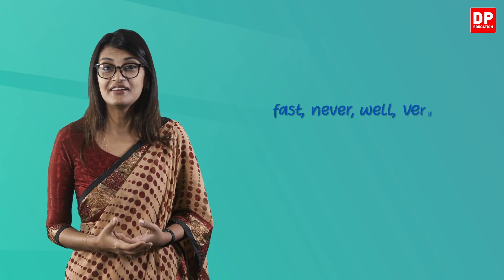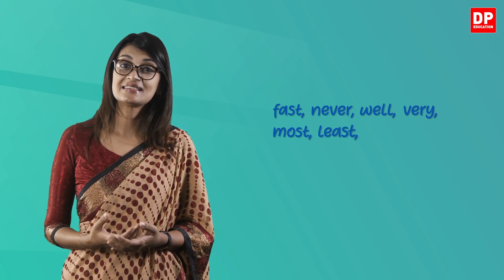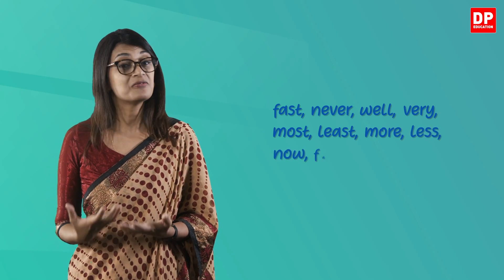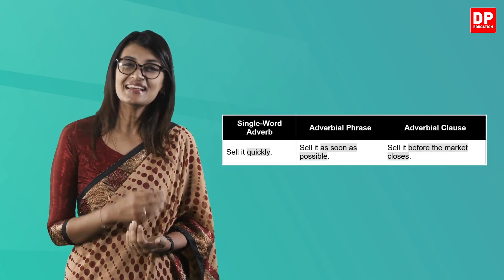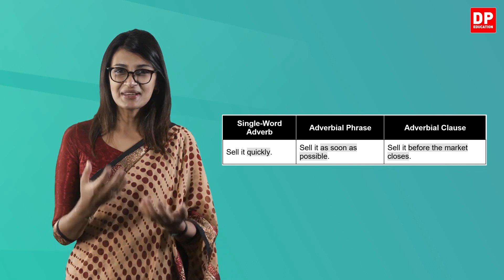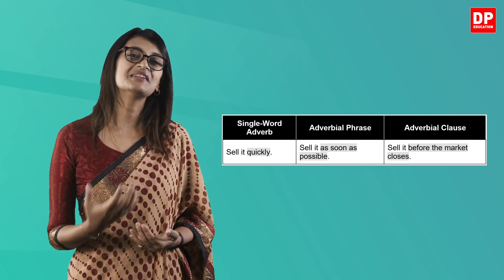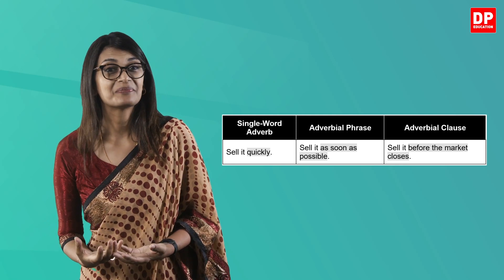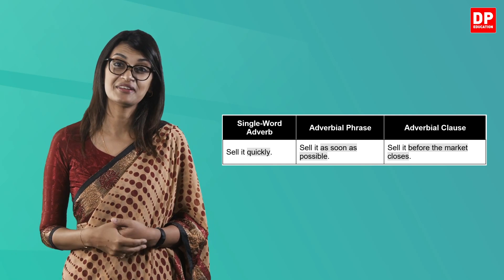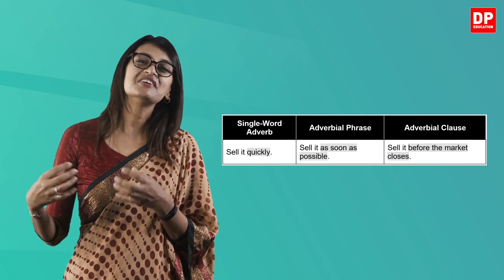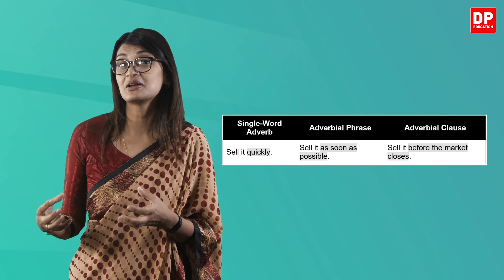Although many adverbs end with -ly, lots do not. For example: fast, never, well, very, most, least, more, less, now, far, there. In real-life sentences, lots of adverbs are phrases or clauses, not single words. Looking at this image: in the first column there is the single word adverb 'quickly'; in the second column the adverbial phrase 'as soon as possible'; and in the third column the adverbial clause 'before the market closes.'